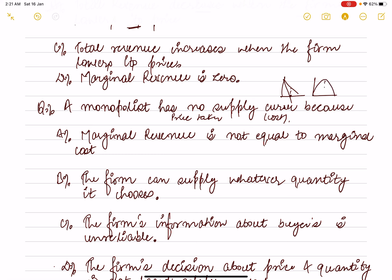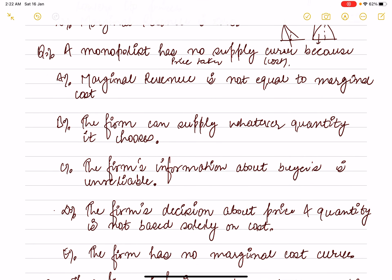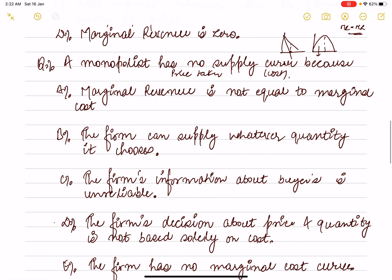The monopolist considers total revenue — in the elastic region MR is positive and total revenue is increasing. The firm produces where economies of scale apply, which is a portion of the AC curve, so the firm has excess capacity. The firm chooses the profit-maximizing condition where MC equals MR, selecting a price-quantity combination from the market demand curve. Therefore the decision is based on price and output, not solely on cost.